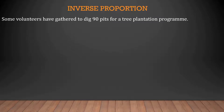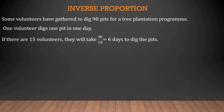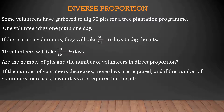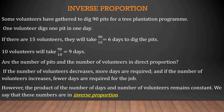Inverse proportion. Some volunteers have gathered to dig 90 pits for a tree plantation program. One volunteer digs 1 pit in 1 day. If there are 15 volunteers, they will take 90/15 = 6 days to dig the pits. 10 volunteers will take 90/10 = 9 days. If the number of volunteers decreases, more days are required, and if the number increases, fewer days are required. However, the product of the number of days and number of volunteers remains constant. We say these numbers are in inverse proportion.